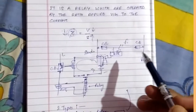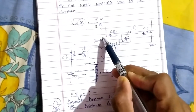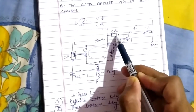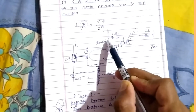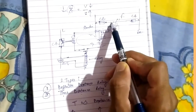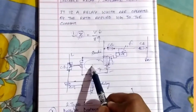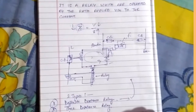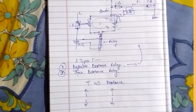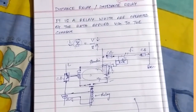If a fault occurs near the sending end, then the time will be less. If the fault is far away from the sending or receiving end, then the time for the impedance relay to activate the tripping mechanism will be high. This is all about the distance relay — please subscribe to the channel, share the videos, and if you enjoyed it, please hit the like button. Thank you.